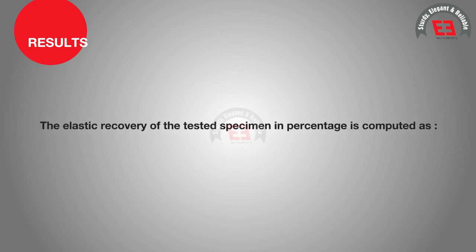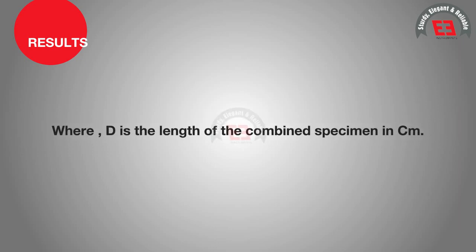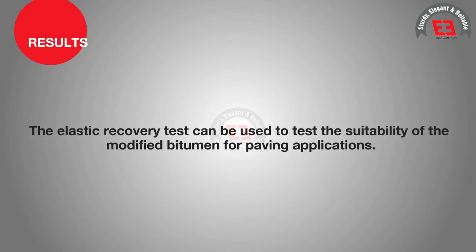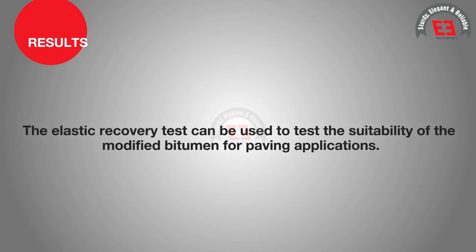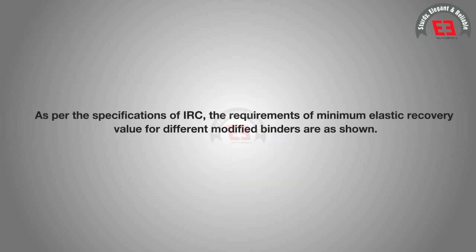Results. The elastic recovery of the tested specimen in percentage is computed as: Elastic Recovery (%) = ((10 − d) / 10) × 100, where d is the length of the combined specimen in cm. The elastic recovery test can be used to test the suitability of the modified bitumen for paving applications. Modified bitumen with a low elastic recovery value is generally found to crack. As per the specifications of IRC, the requirements of minimum elastic recovery value for different modified binders are as shown.